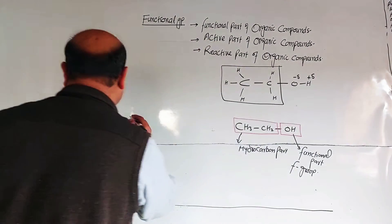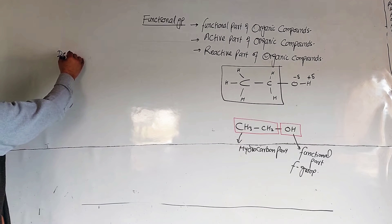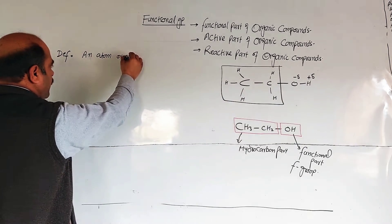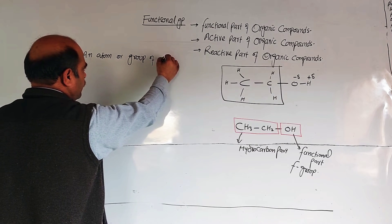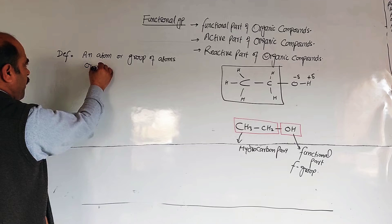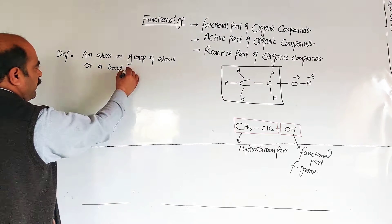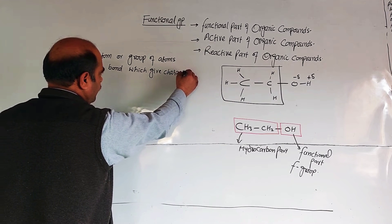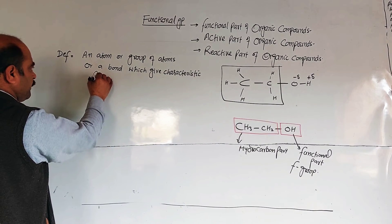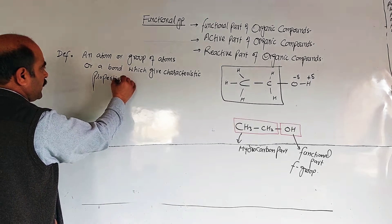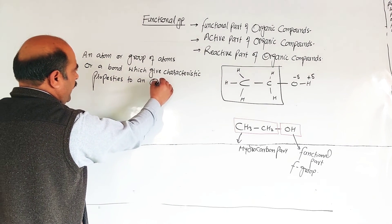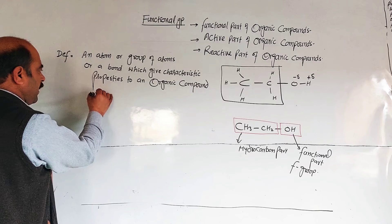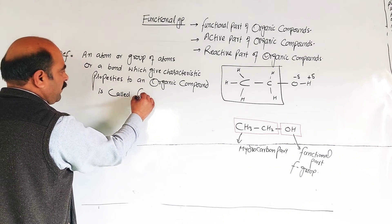What is the definition of a functional group? An atom, or group of atoms, or a bond which gives characteristic properties to an organic compound is called a functional group.